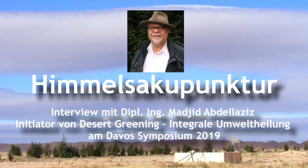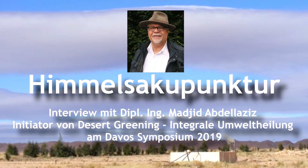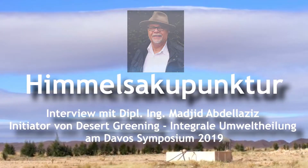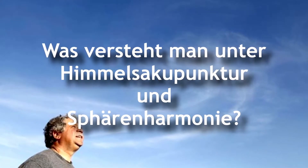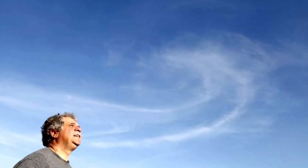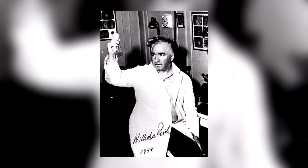Can you explain what you mean by celestial acupuncture and what do you know about harmony of the spheres? The method I call celestial acupuncture is based on the work of Wilhelm Reich. Reich had discovered in 1954 how he can produce and test this in the Arizona desert. He called his invention the cloudbuster, which means cloud destroyer, but it also could make clouds smaller or disappear.